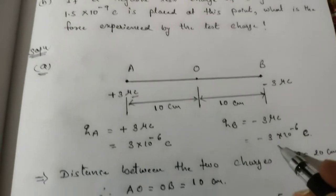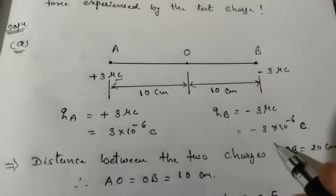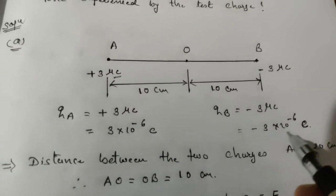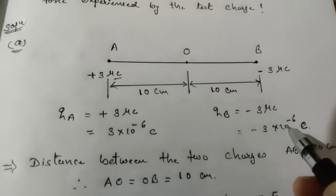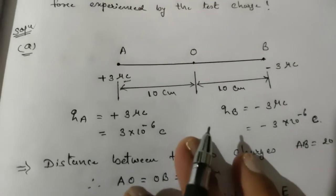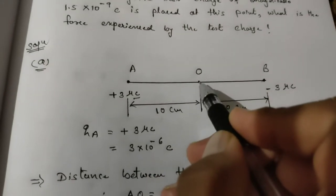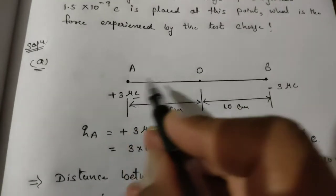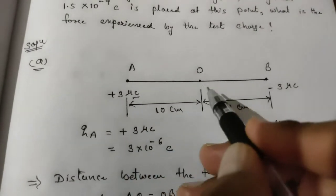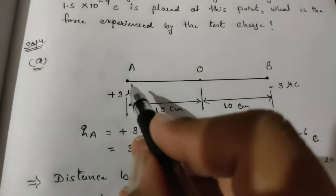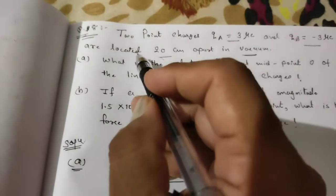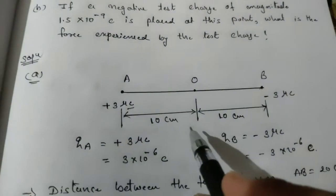Similarly, point B has -3 microcoulomb charge, so QB = -3 × 10⁻⁶ coulomb. The midpoint O is here, with distance A to O being 10 centimeters and O to B being 10 centimeters, totaling 20 centimeters.